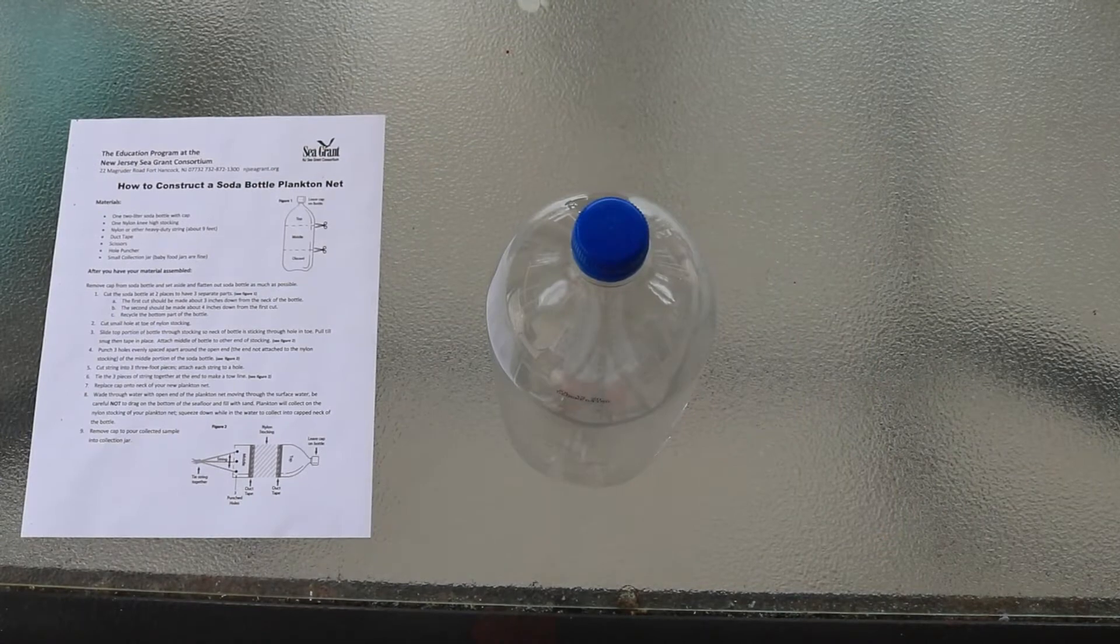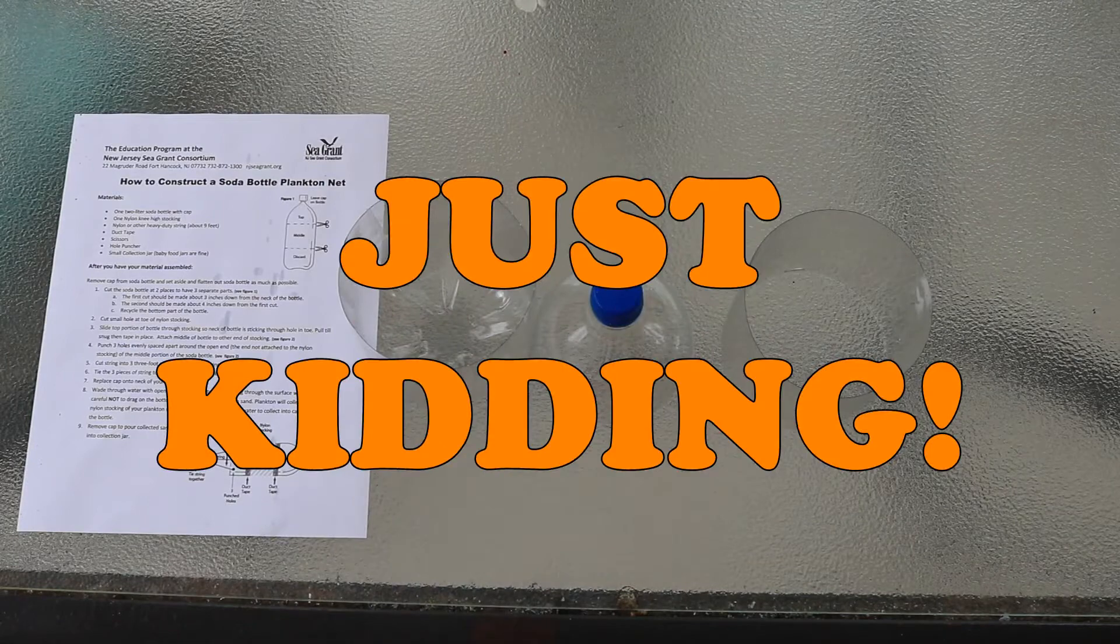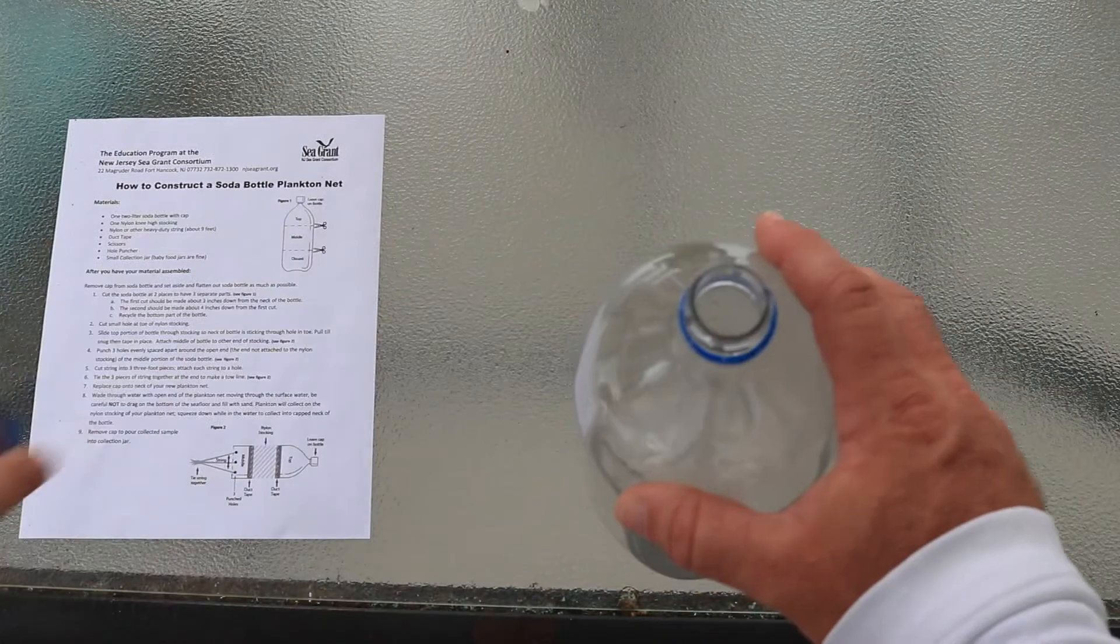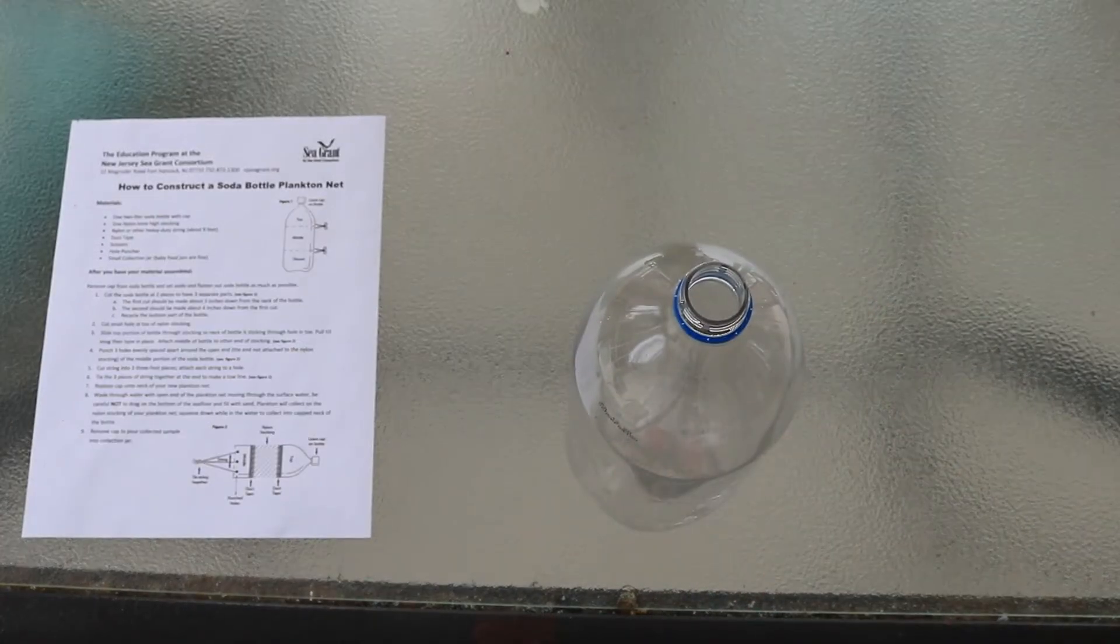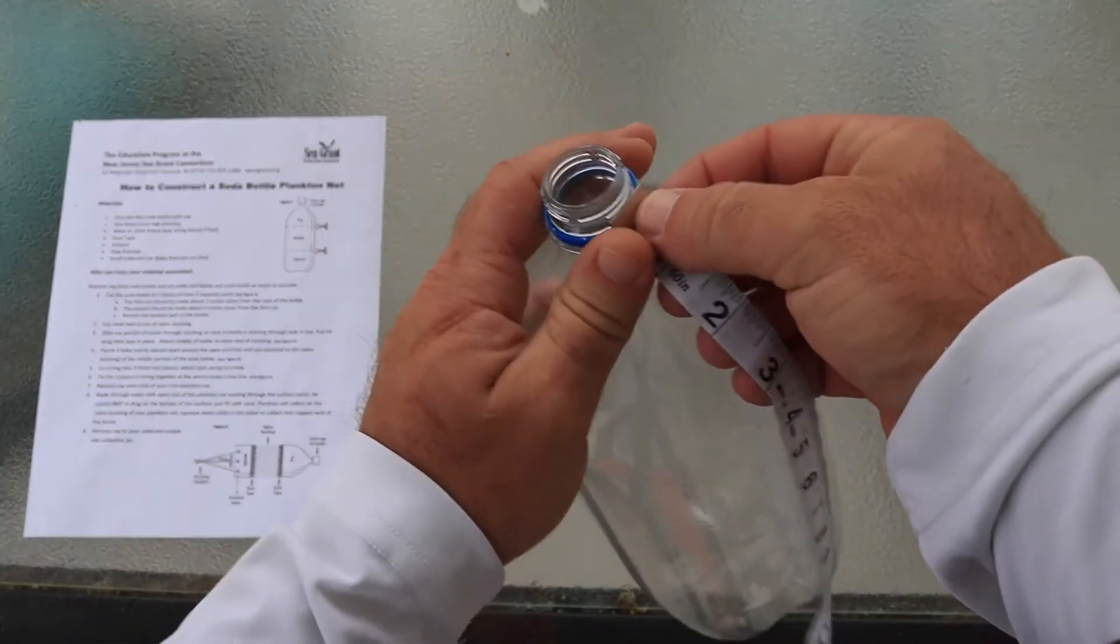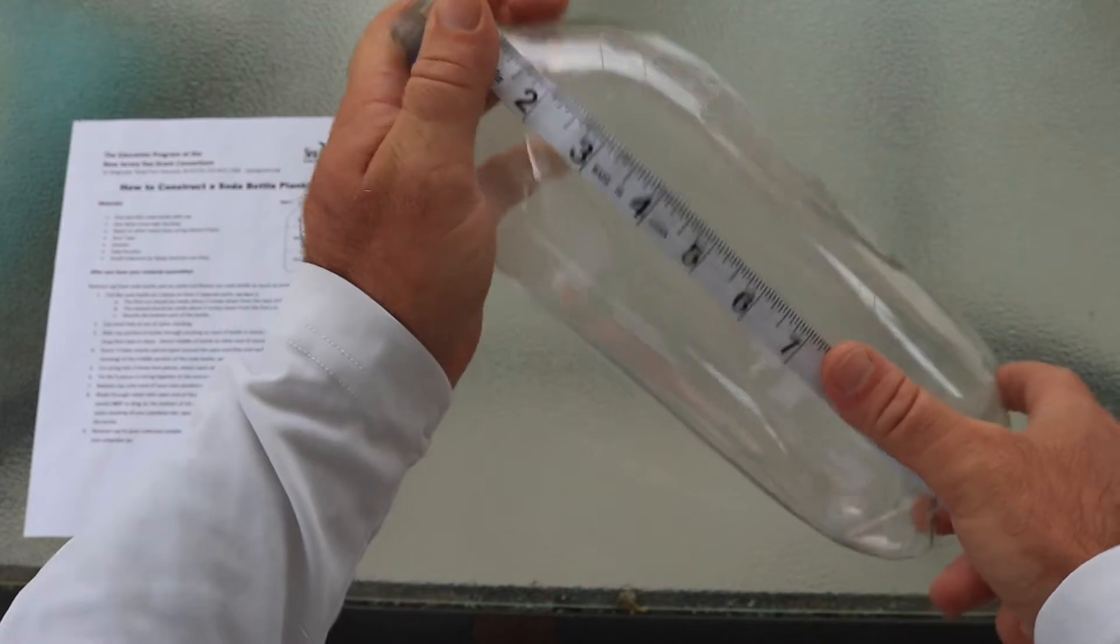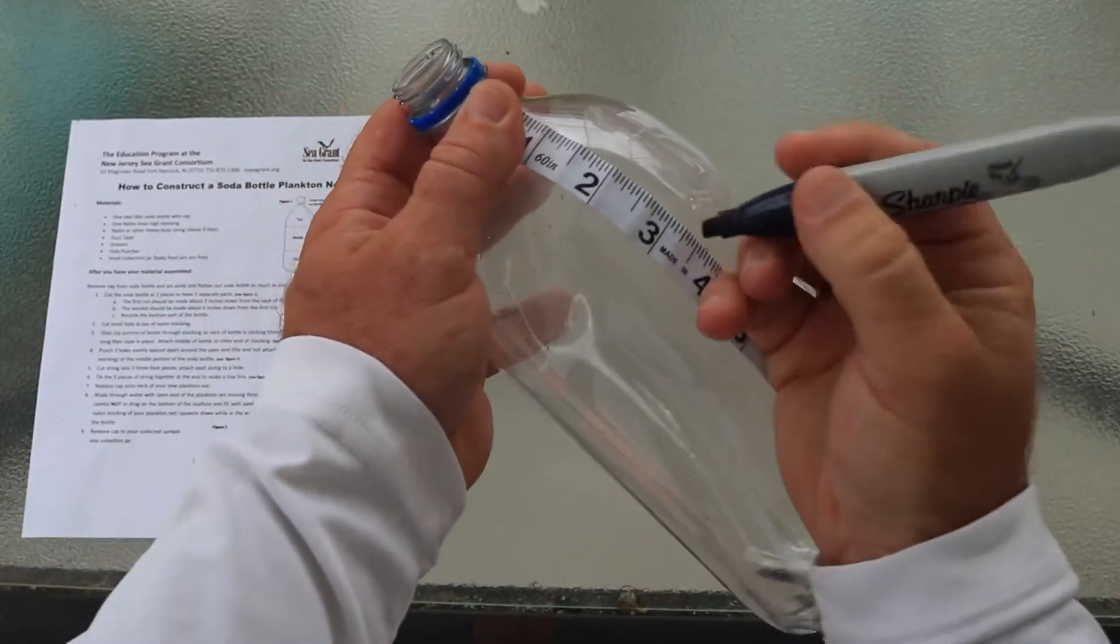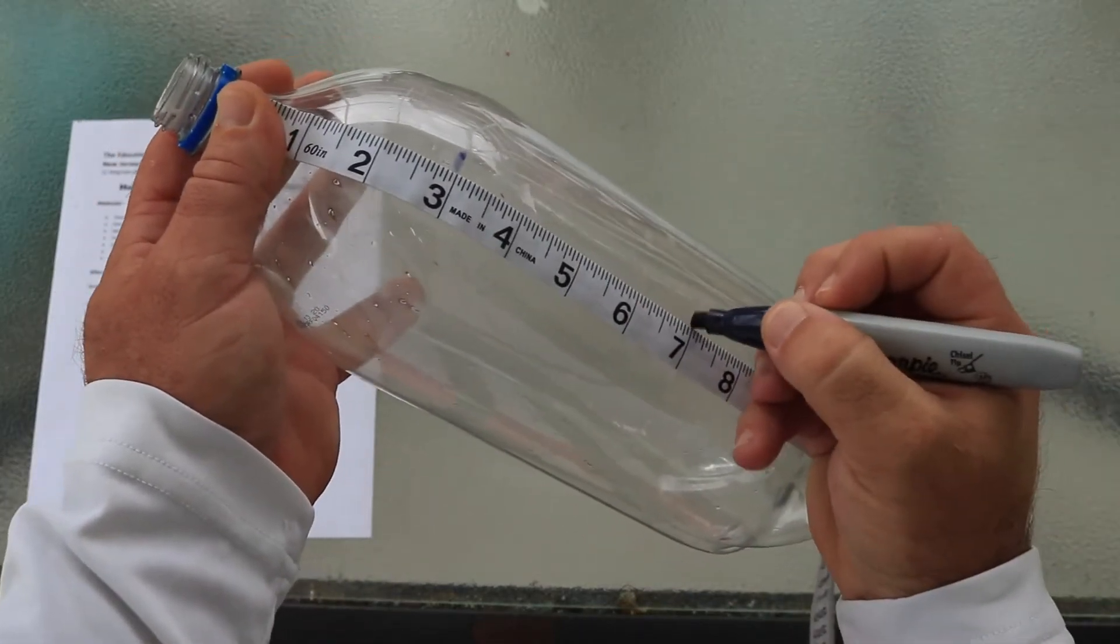Alright, step one, we need to cut the bottle into 3 pieces. First thing we're going to do is take off the cap and set it aside. We want to measure and mark 3 inches down from the top, and then 4 inches down from the first cut to the second cut. So from the neck, we're going to cut down 3 inches, and then we're going to cut down 4 more inches right here.